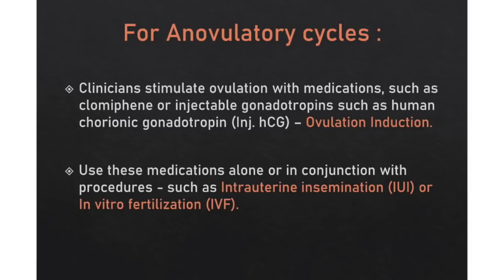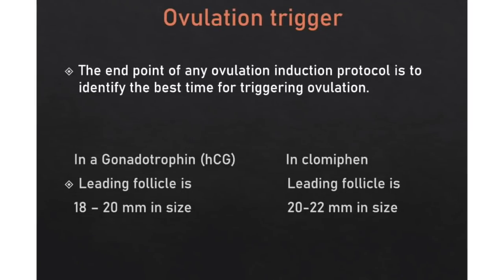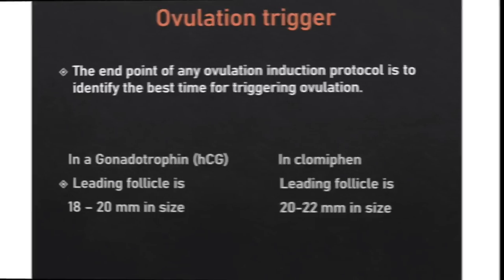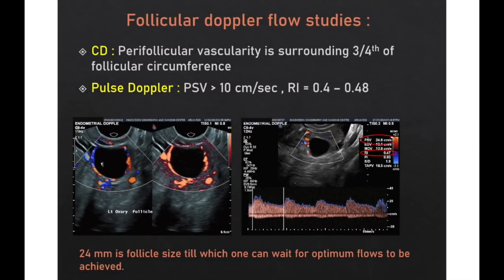In females with non-ovulatory cycles, ovulation induction is done by clomiphene or injection gonadotropin. The endpoint of any ovulation induction protocol is to identify the best time for triggering ovulation. In gonadotropin cycles, the leading follicle should ideally be 18 to 20 mm, whereas in a clomiphene cycle, it should be 20 to 22 mm. Earlier, a follicle size of 16 to 18 mm was considered the optimum parameter for HCG administration, but this only assesses anatomical maturity, so vascular changes need to be considered, giving rise to the emerging role of Doppler.